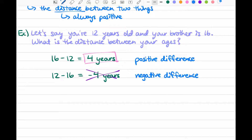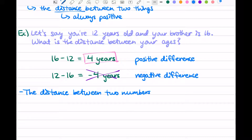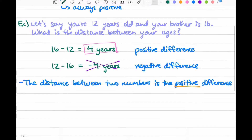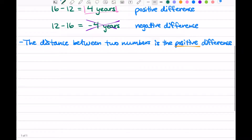What we see here is that the distance between two numbers is the positive difference — it's the positive subtraction. So that's going to be important to keep in mind as we get into our next example: the order matters when you're subtracting.